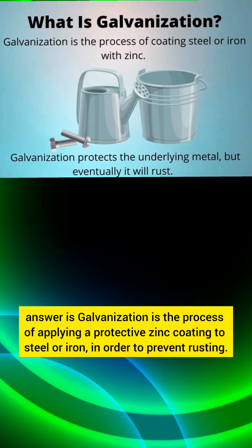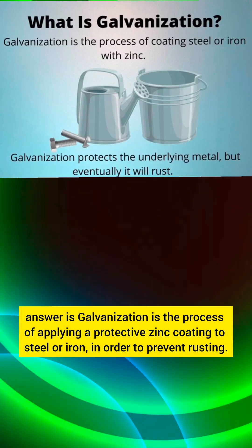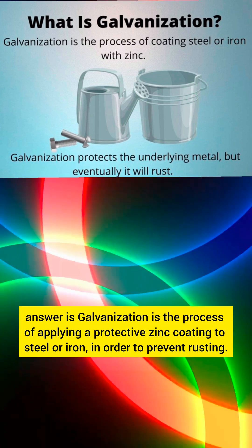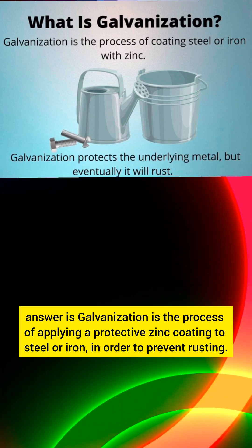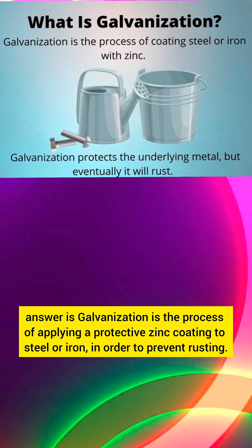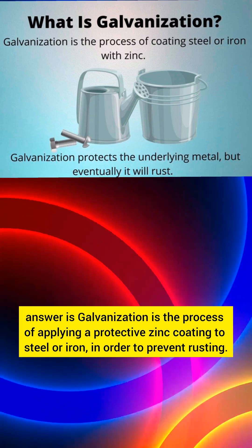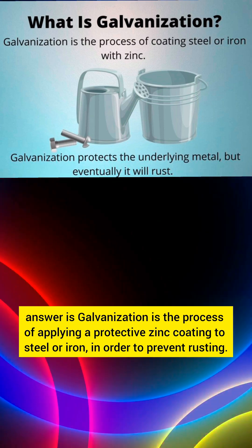What is galvanization? Answer: Galvanization is the process of applying a protective zinc coating to steel or iron in order to prevent rusting.